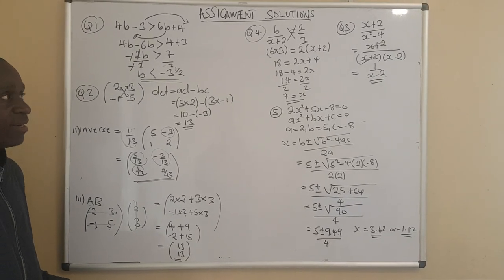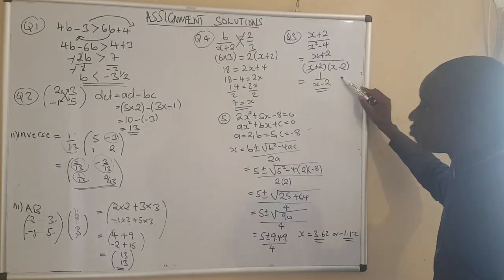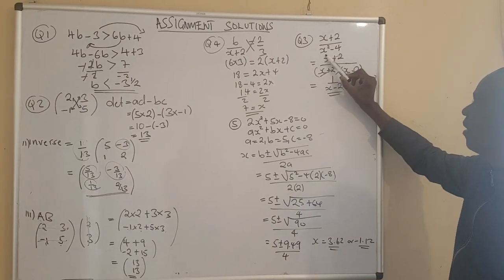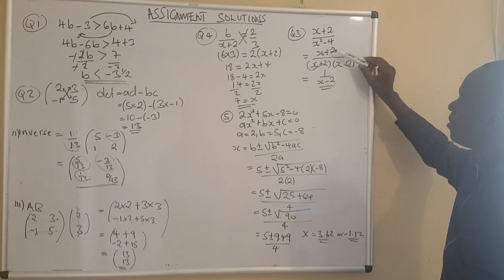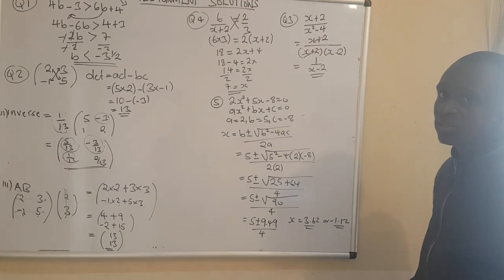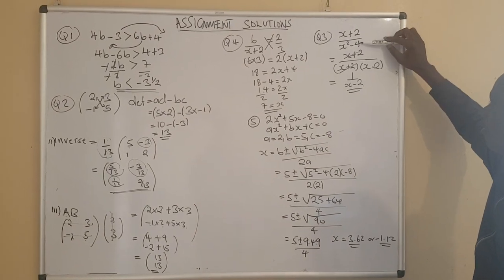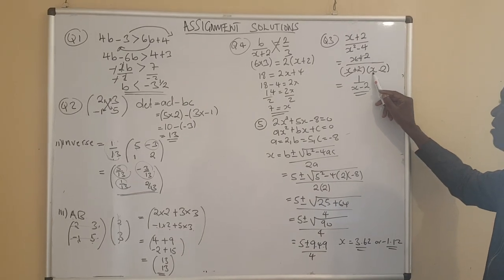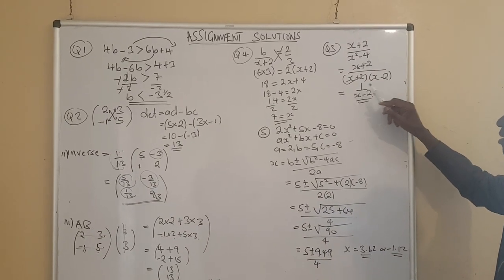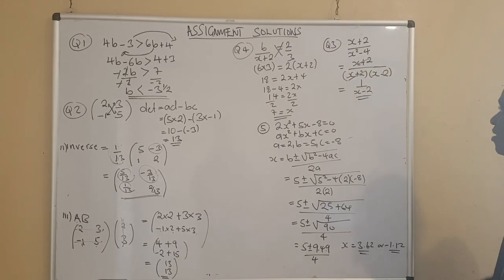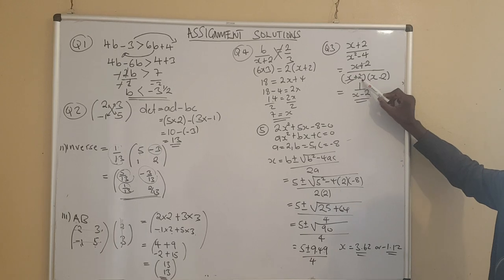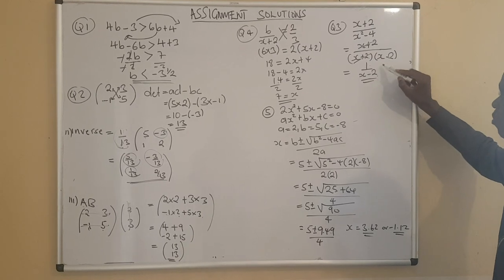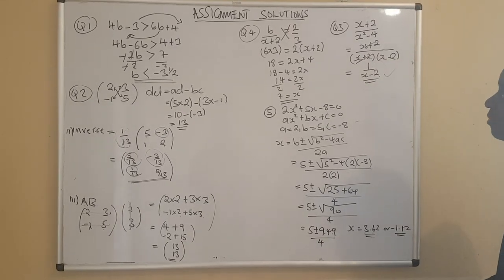Question 3 required us to simplify: x plus 2 over x squared minus 4. The denominator is a difference of two squares, so we factorize it to get x plus 2 times x minus 2. We then cancel the common factor x plus 2, and we remain with 1 over x minus 2. That was the solution for question 3.